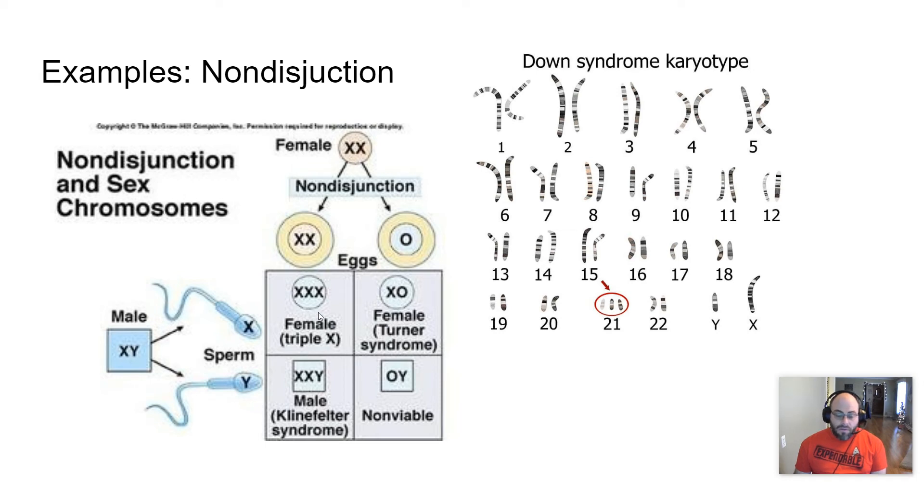You can have a female that has 3X chromosomes, typically normal, probably a little taller than other females, but other than that fairly normal. And then you can have males that have XXY or an extra X chromosome. This is called Klinefelter syndrome.